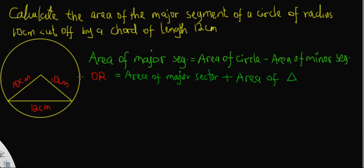It makes sense: when you calculate the area of the whole circle and subtract the area of the minor segment, that difference will be the area of the major segment. Alternatively, you can calculate the area of the major sector and then add the area of the triangle. Either of these two formulas would work fine for calculating the area of the major segment.